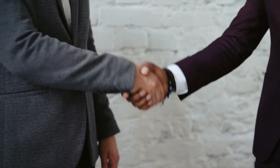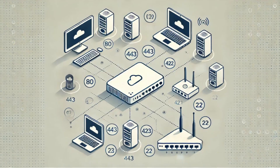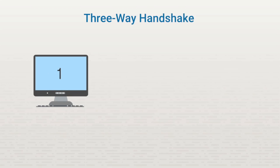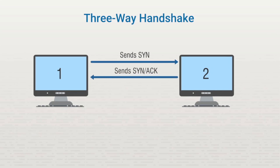The three-way handshake occurs when you're trying to use TCP to connect to a port. As indicated by the name, the handshake has three steps. For example, Computer 1 wants to connect with Computer 2. Computer 1 sends a SYN packet to Computer 2. Computer 2 receives the packet and sends a SYN ACK packet to Computer 1. Computer 1 receives the SYN ACK packet and replies back with an ACK packet, and the connection is complete.